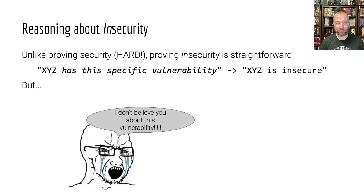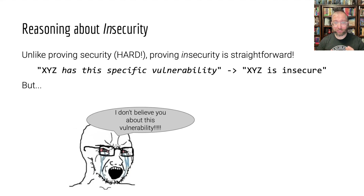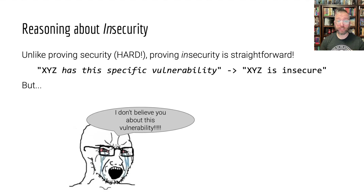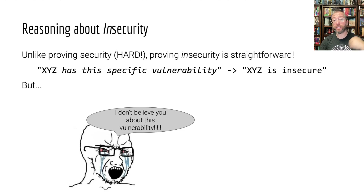All right, we're back with a fixed screen. What we get from this is that unlike proving something is secure, proving that it's insecure is actually very straightforwardly doable. All we have to do is find a specific vulnerability — like the cryptographers found in various encryption standards that were proposed — and say, here it is, boom.